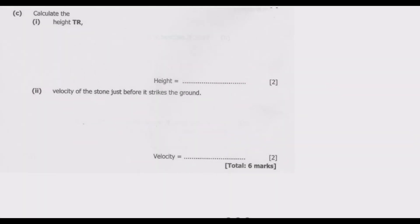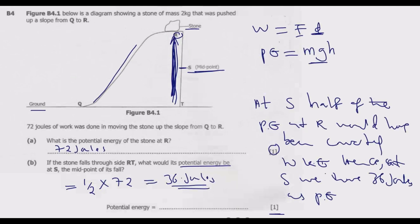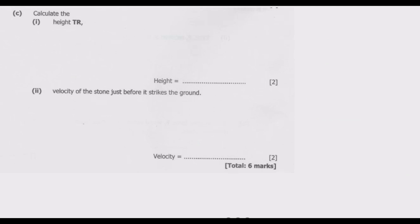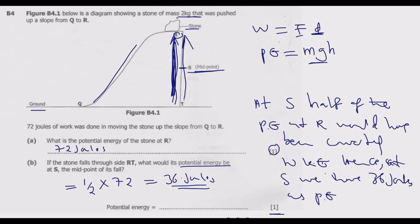Question C: calculate height TR. We are looking for the vertical height TR. We know the potential energy, which is given by mass times gravity times height. At R, the potential energy is 72 joules. The mass of the stone is 2 kg.